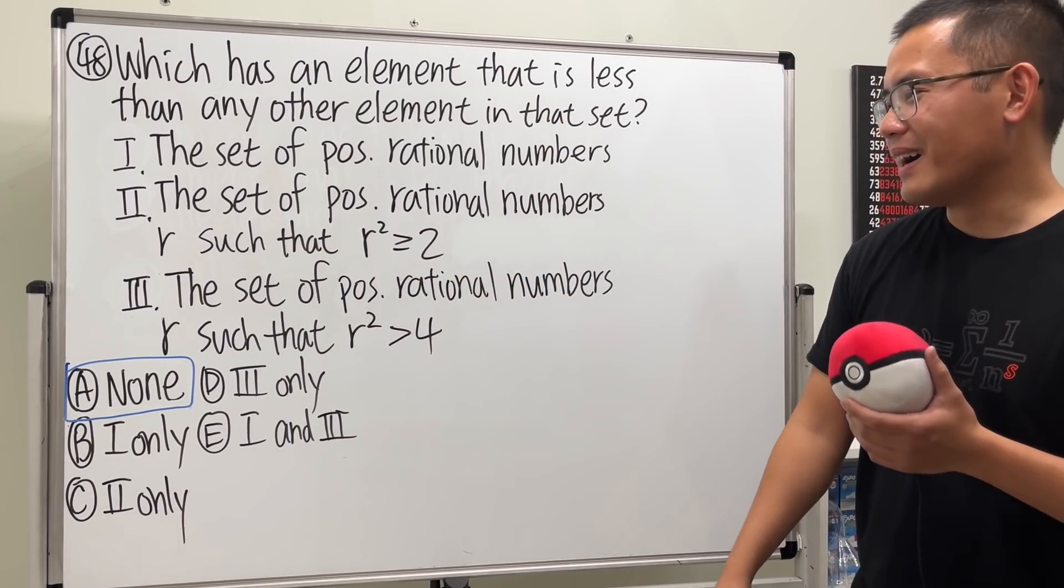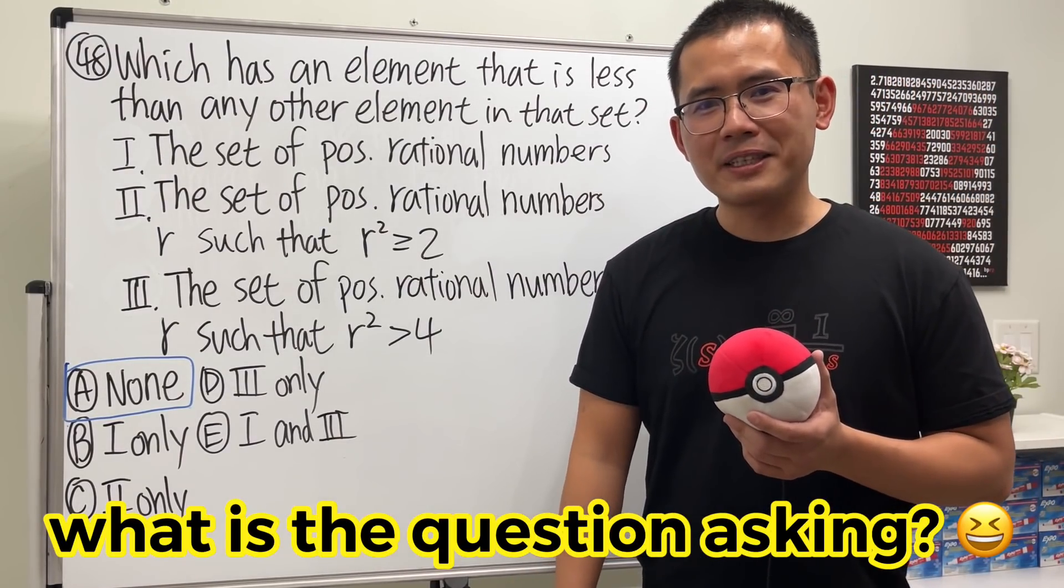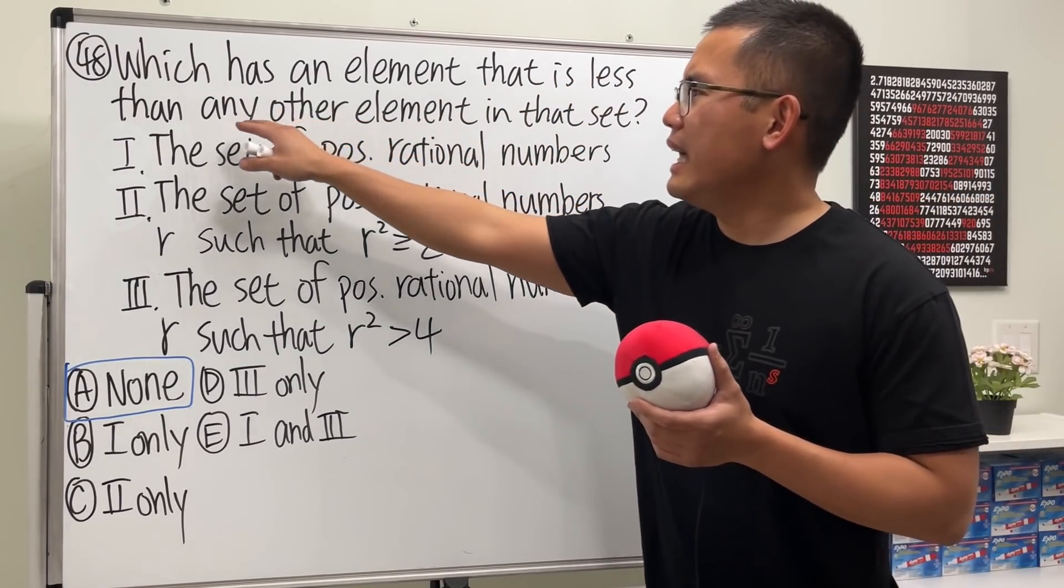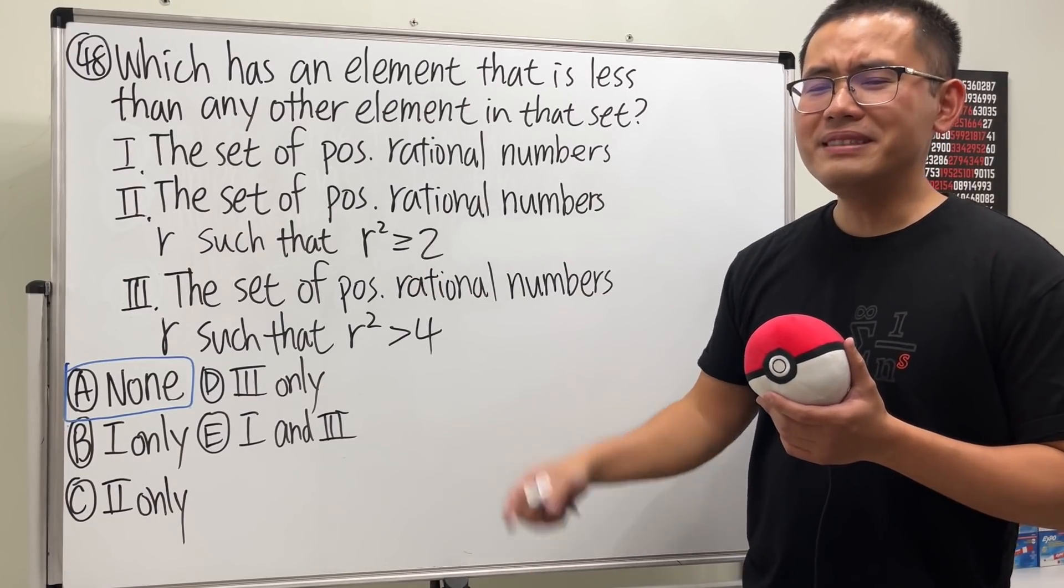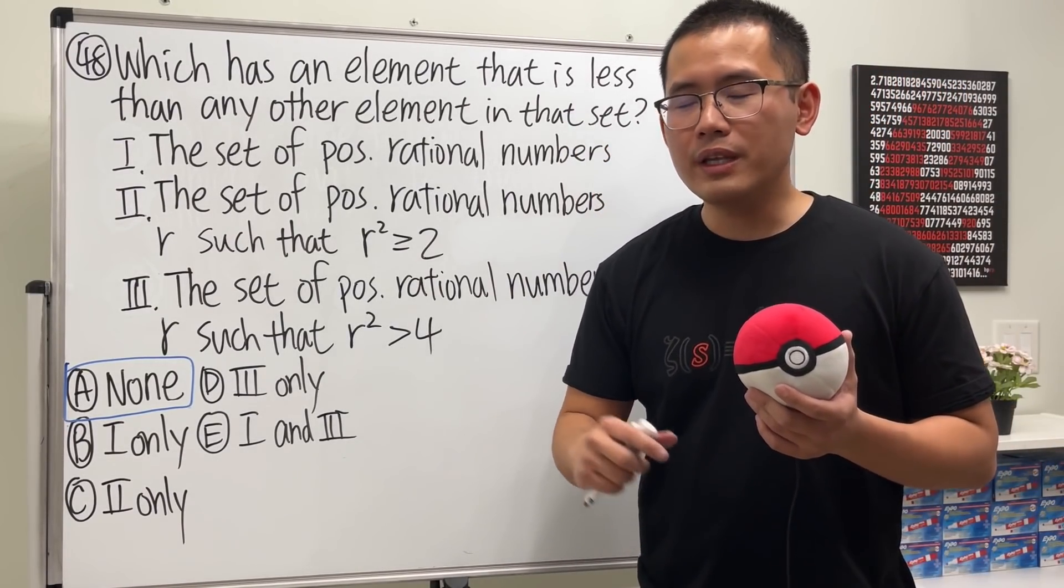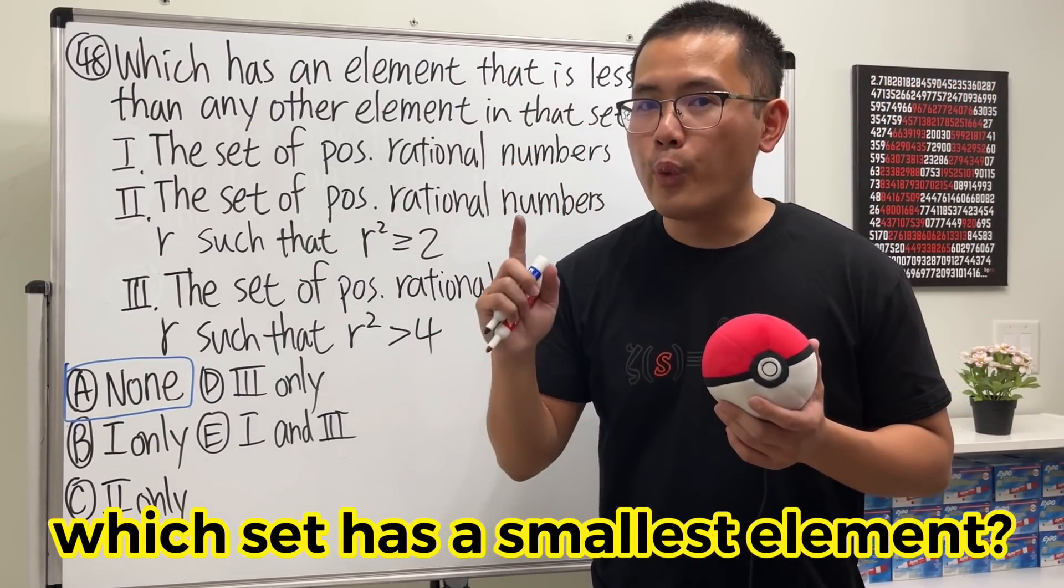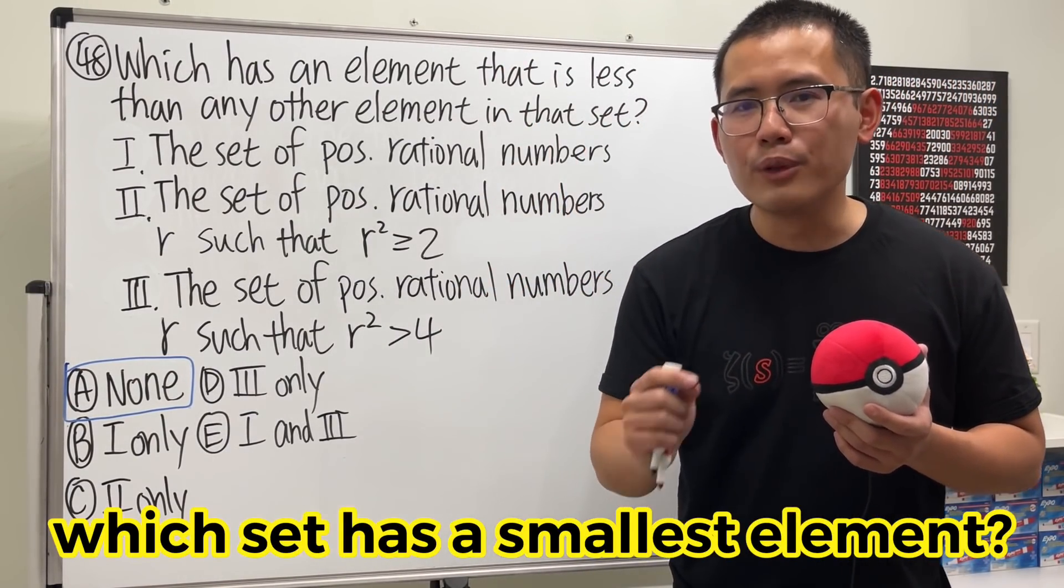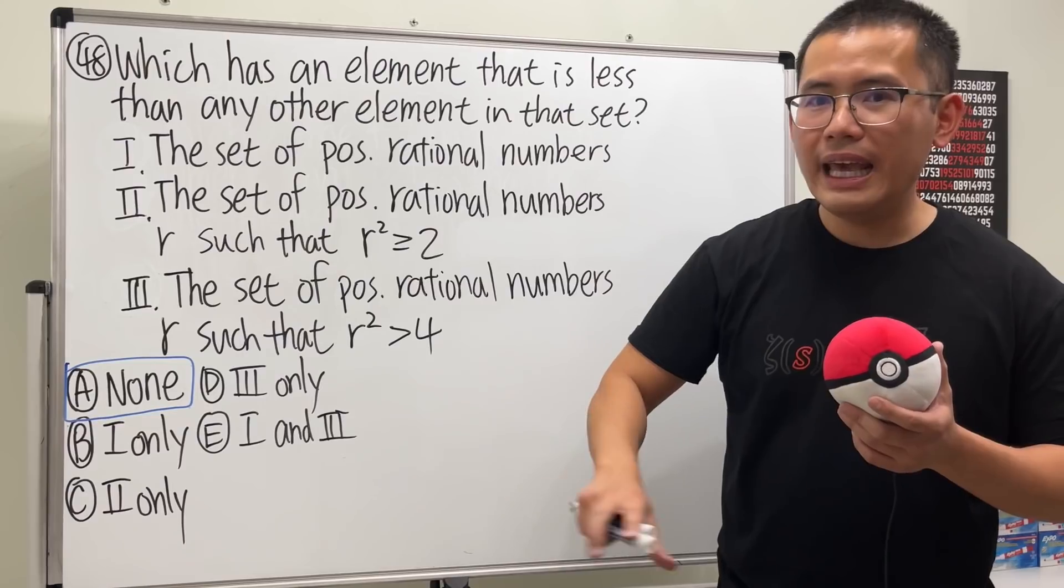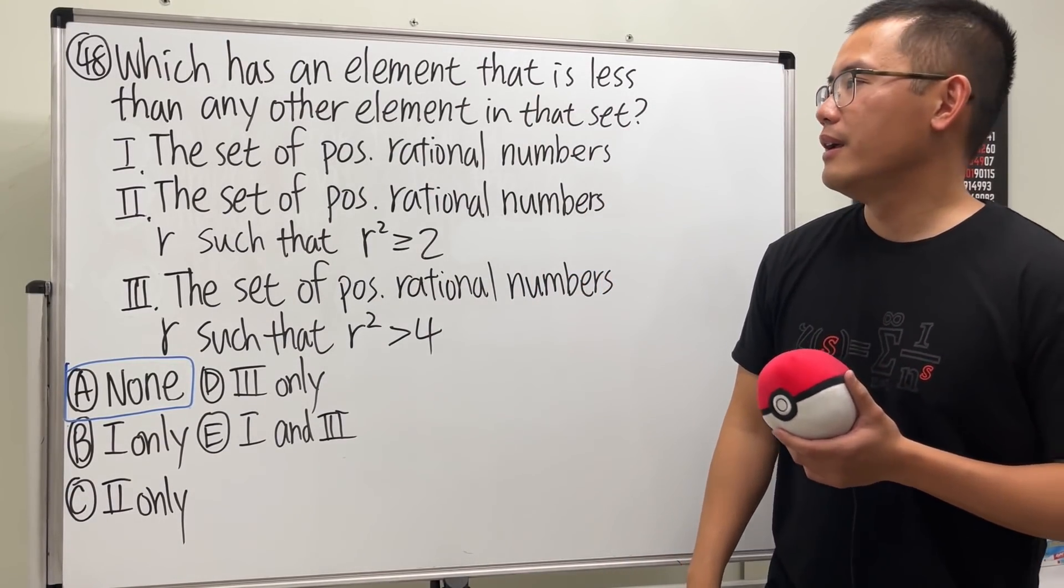Okay, so let's go over how to answer this question. First off, what is the question asking? Which set has an element that is less than any other element in that set? This is how math people will write the question, but the truth is we can actually read this in a simpler language. The question is just asking which set has a smallest element. That's it. Because we want an element to be smaller than any other element, so the element has to be the smallest.